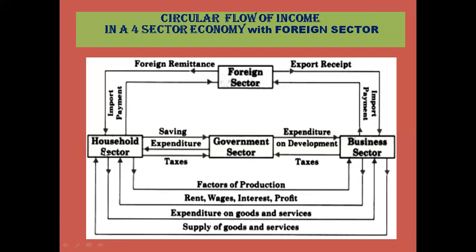Households buy goods and services from firms, so firms supply goods and services - the arrow flows from firms to households. In return, the household sector does consumption expenditure, paying the firms for those goods and services. So money flows from the household sector as expenditure on goods and services to the business sector, completing the household-firm circular flow.